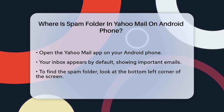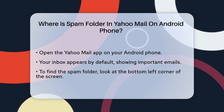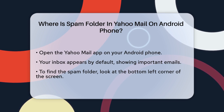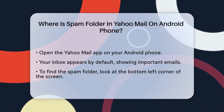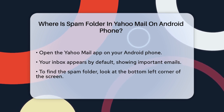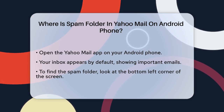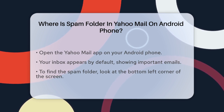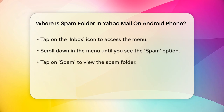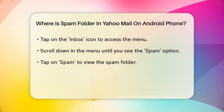First, make sure you have the Yahoo Mail app installed and open on your Android device. Once you're in the app, you'll see your inbox by default, showing all the emails that Yahoo Mail thinks are important.